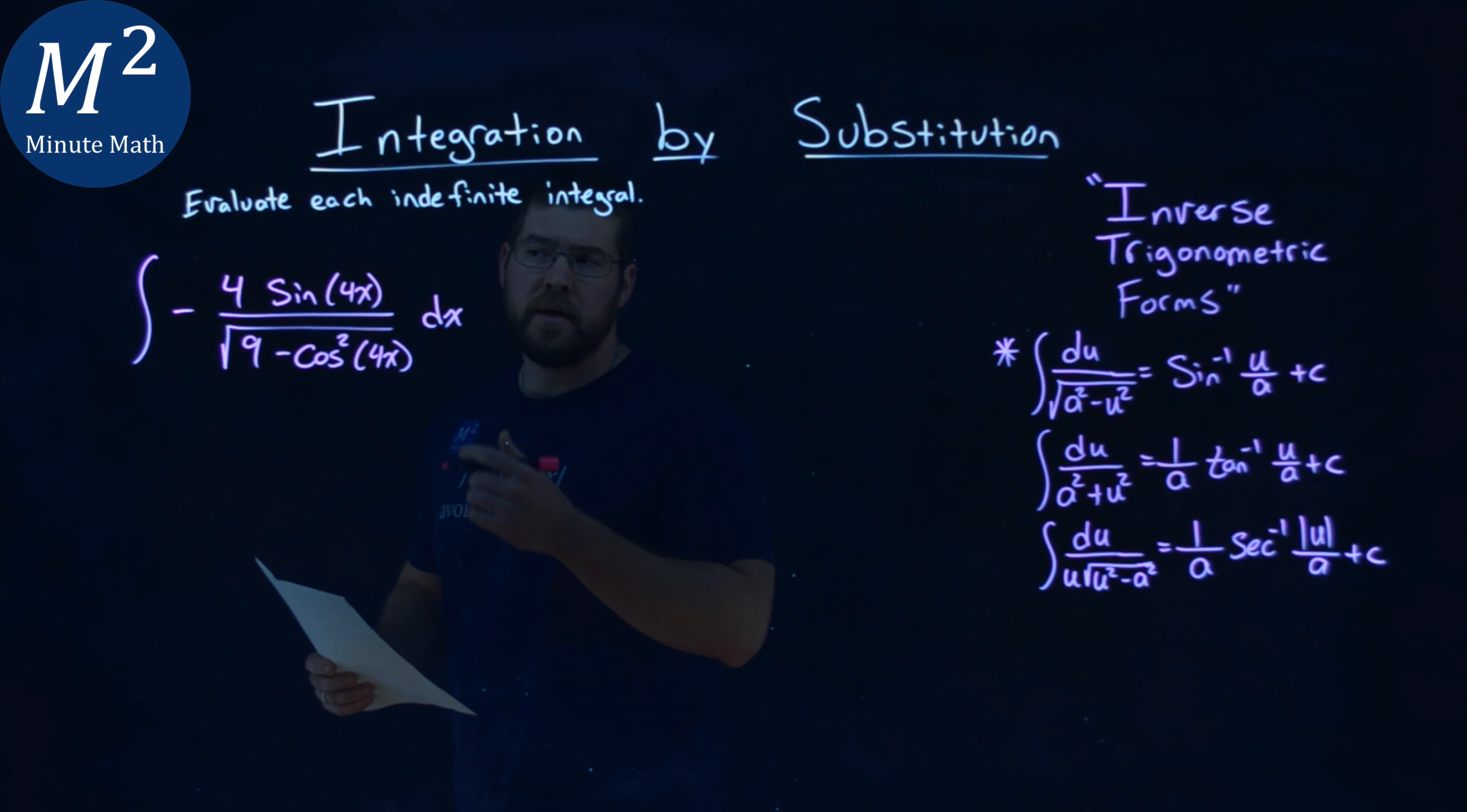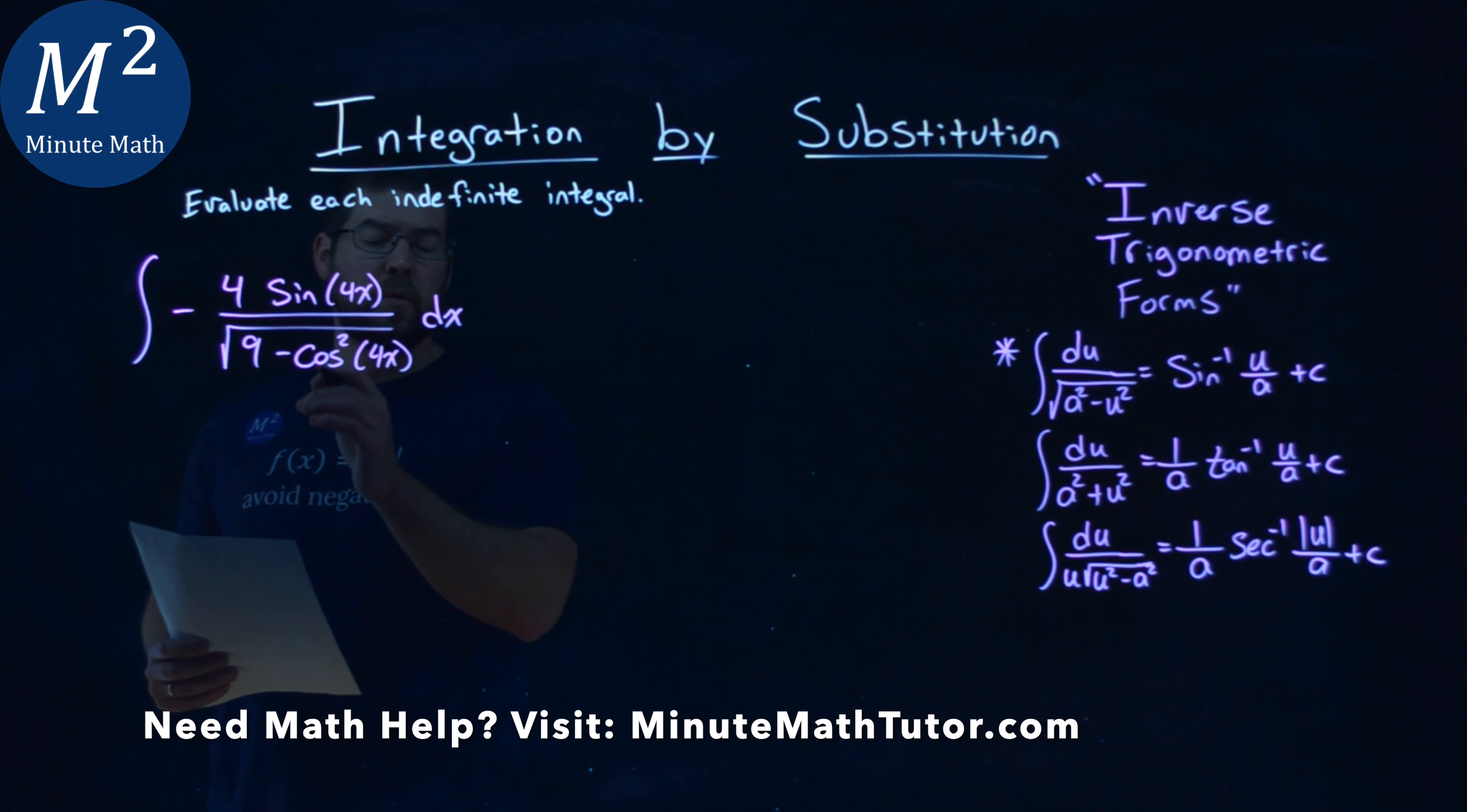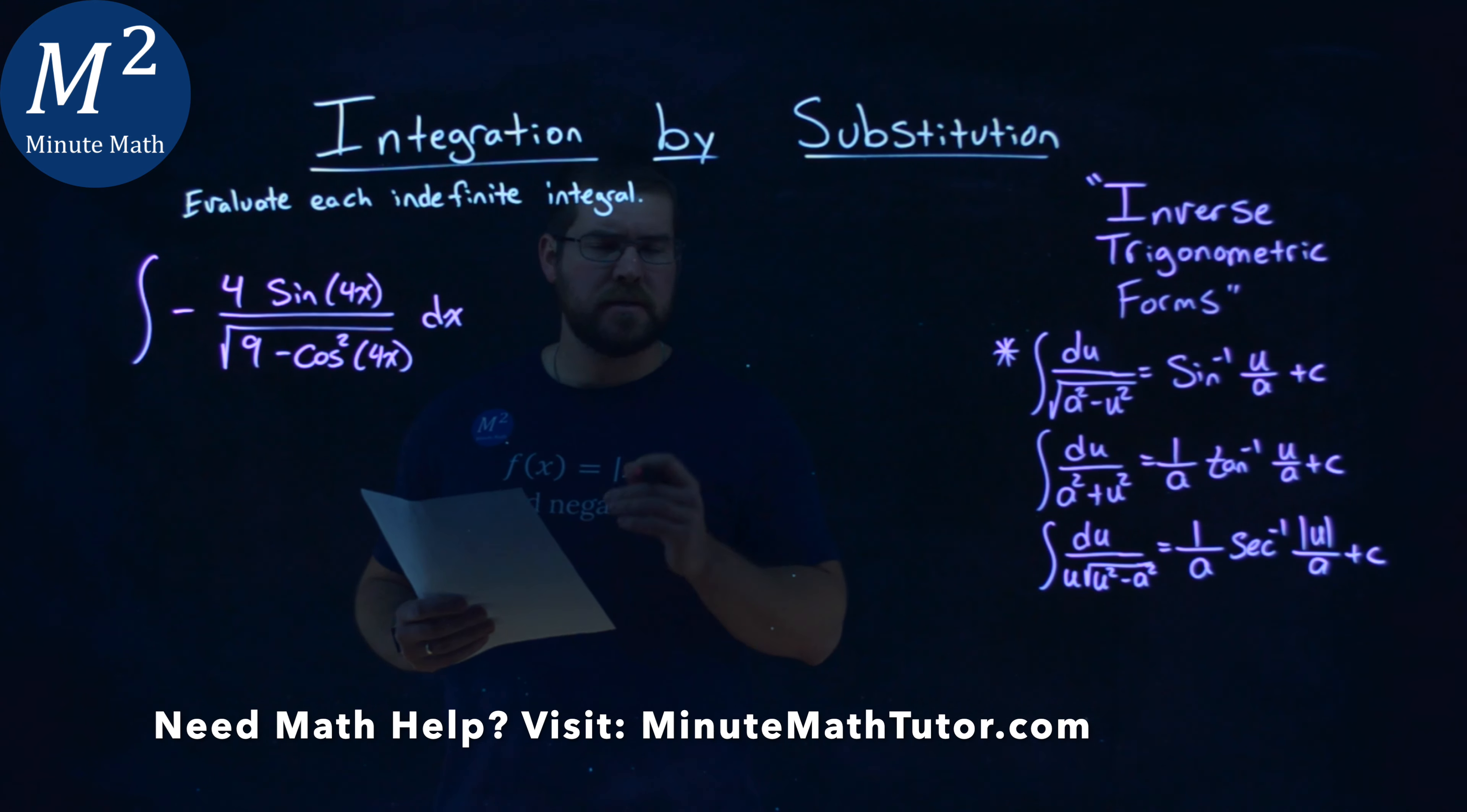We're given this problem: the integral of negative 4 sine of 4x over the square root of 9 minus cosine squared of 4x dx. We have to evaluate this indefinite integral.